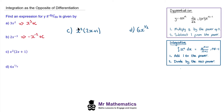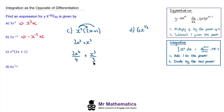For question c, to integrate we're going to expand out the brackets. So we have 2x³ and then x² times 1 which is just x². Now we add 1 to the power of 3 to get 2x to the 4, divide by the new power 4, and for the x² term we add 1 to the power of 2 to get x³ divided by 3, remembering to add the constant term. Simplifying: 2 divided by 4 is a half, so we have one half x to the 4 plus x³ over 3 plus c.